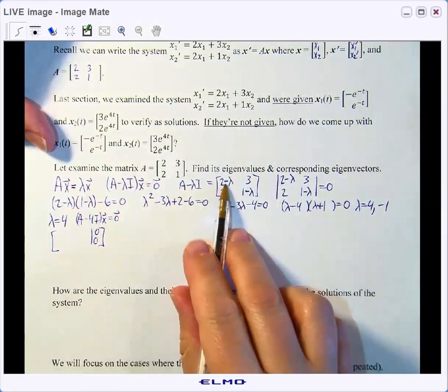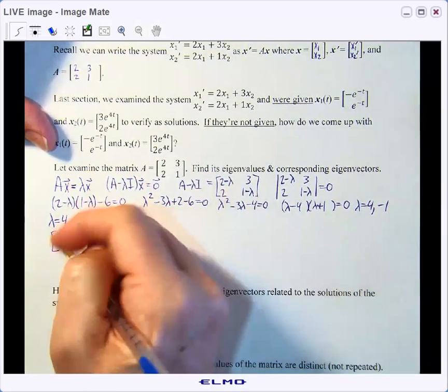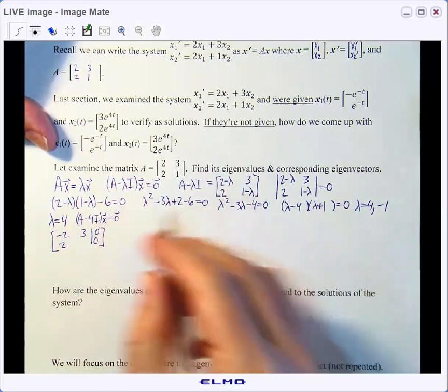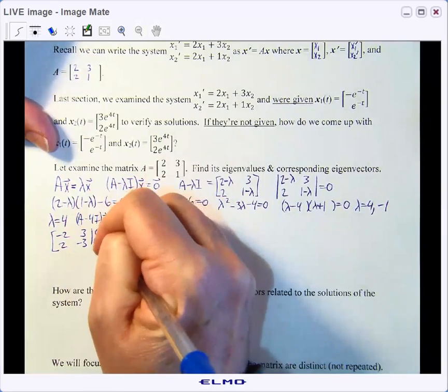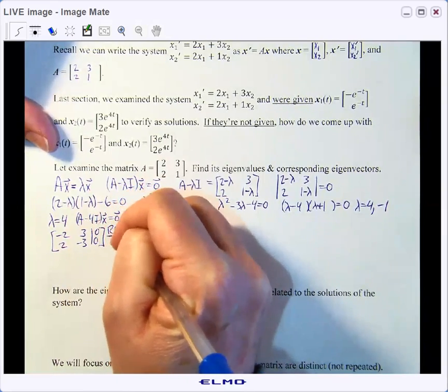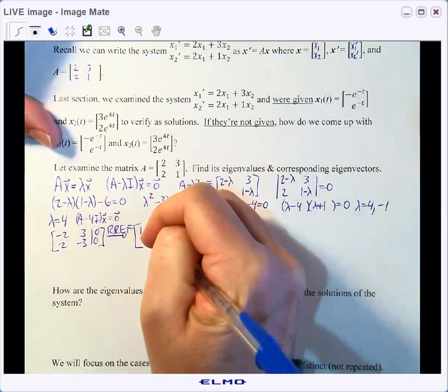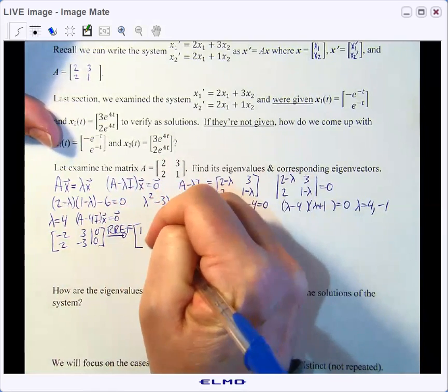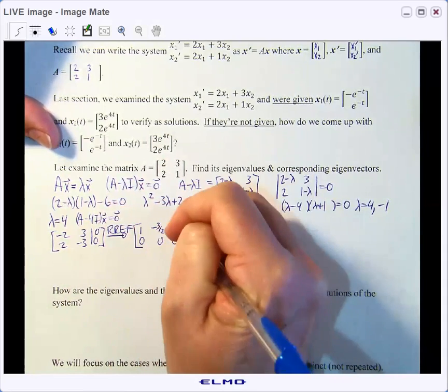So 2 minus 4 is negative 2, 3, and 2, 1 minus 4 is negative 3. And if we put this in reduced row echelon form, we will get the matrix 1, negative 3 halves, 0, 0, 0, 0, 0.